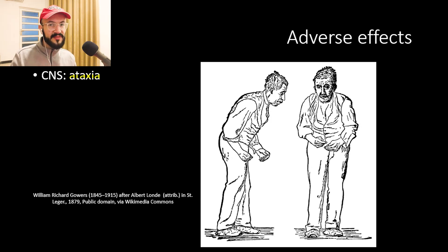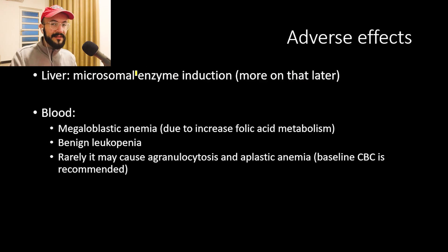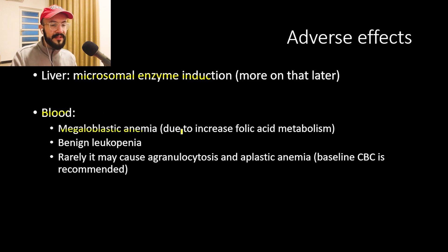The CNS symptoms caused by carbamazepine are also shared by most of the first-generation anti-epileptics. Carbamazepine also affects the liver, leading to microsomal enzyme induction, which we will discuss shortly. It affects the blood, leading to megaloblastic anemia due to increased folic acid metabolism caused by CYP450 enzyme induction.